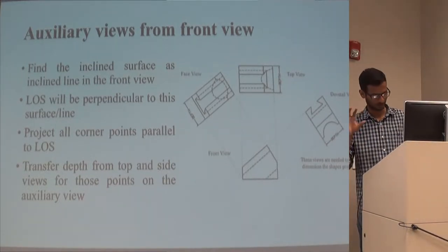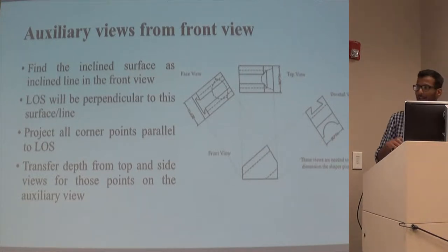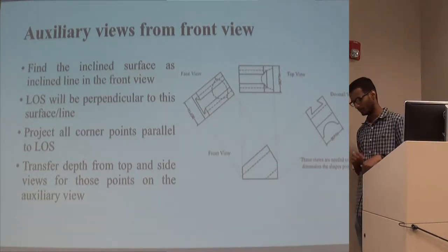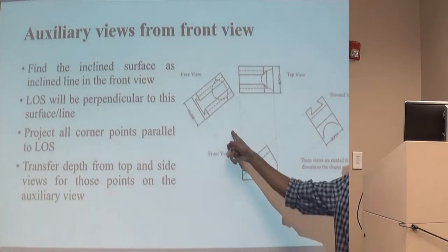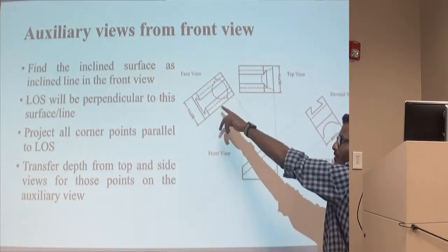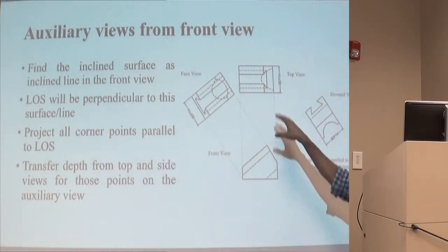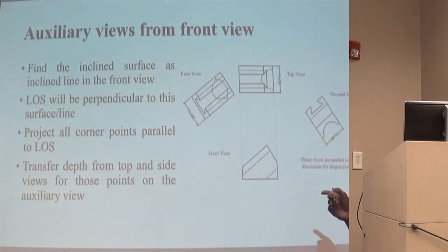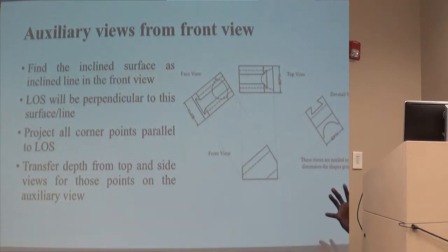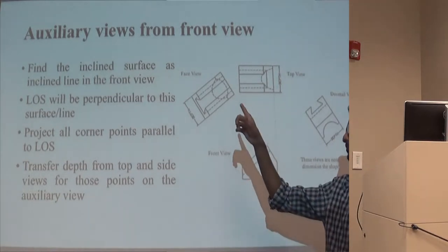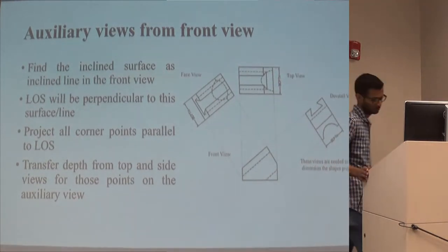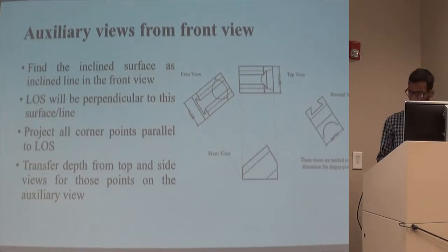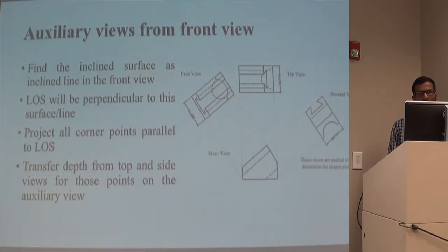Remember these are the main rules when going about an auxiliary view from the front. LOS means line of sight — your line of sight is perpendicular to that inclined surface. That means you are looking at that particular angle, and whatever you would be seeing at that angle needs to be shown in your auxiliary view. For orthographic views, we were just looking perpendicular to one face of the cube. But for auxiliary views, your line of sight would be perpendicular to that particular inclined surface. You project all corner points parallel to the line of sight and transfer the depth from either top or side, whichever is given.